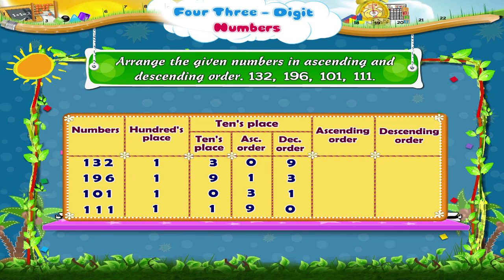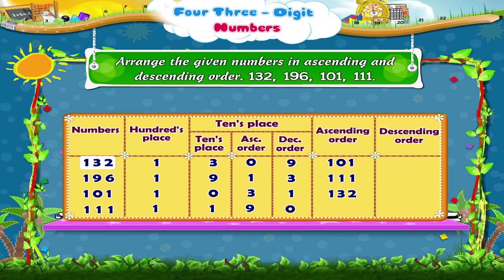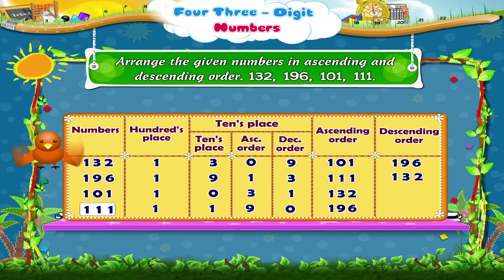Using this, we arrange the given set of numbers in the ascending order as 101, 112, 113, 132, and 163. And the descending order as 196, 173, 132, one hundred and eleven, and one hundred and one.